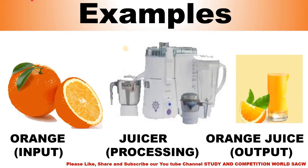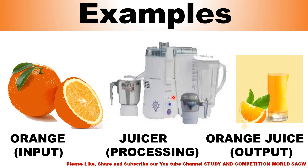Let's take one more example. These are oranges — oranges are the input. This is a juicer — you put the oranges into the juicer. The juicer does the processing: your juice is being made. After that, you get orange juice — that is the output.